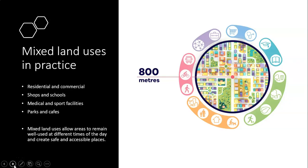In practice, this is illustrated by the TCPA 20-minute neighborhood diagram with that magic 800-meter distance. The diagram uses all the different colors from the different features of the 20-minute neighborhood to show how they might be integrated and mixed. You need to think about how you can have lots of different compatible land uses happening in the same space — mixing residential and commercial, having shops and schools close together, medical and sport facilities close together, parks with cafes — different land uses that get different groups of people into the same area for different reasons at different times.